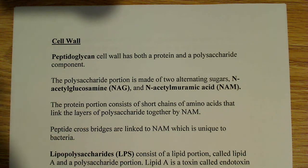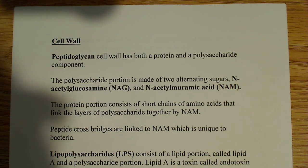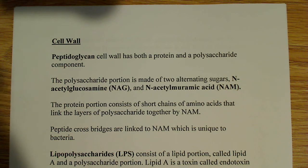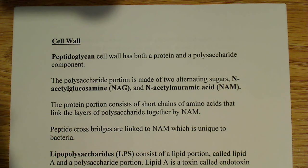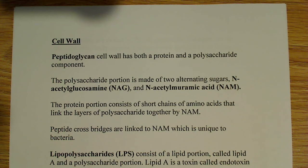Now I want to talk about the cell wall. The main component of the cell wall is peptidoglycan, and it has both a protein portion and a polysaccharide portion. It's a net-like molecule that makes up the cell wall. Gram-positive bacteria have a very thick peptidoglycan cell wall, and gram-negative bacteria have a very thin peptidoglycan cell wall. The polysaccharide portion consists of a glycan chain.